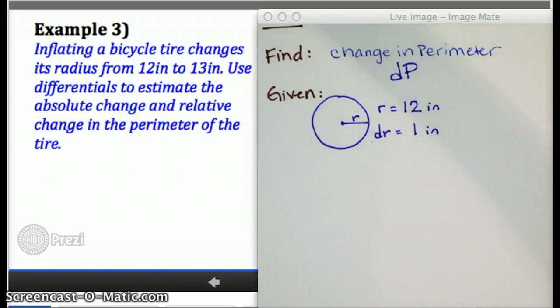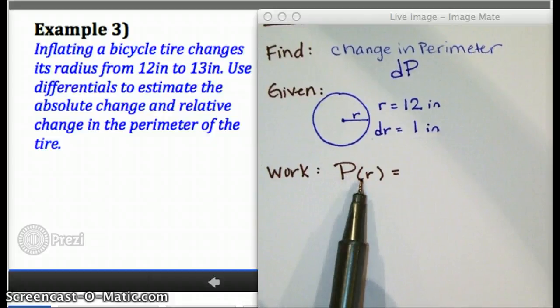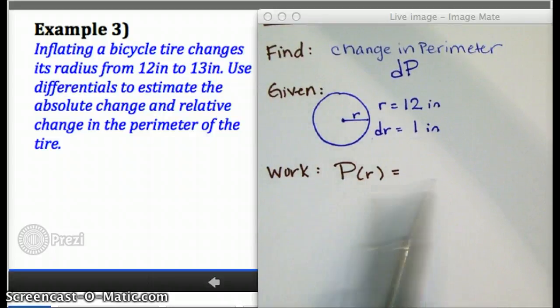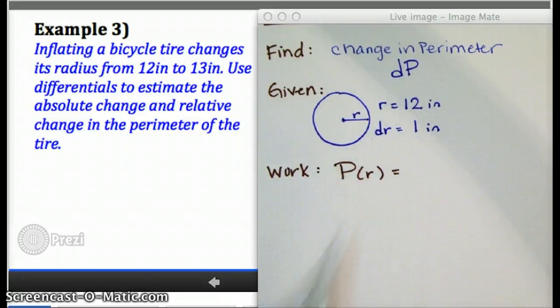What would I want to write as my equation? How am I going to start this? Right, I need a function whose output is perimeter and input is radius. And then eventually I'm going to use that function to solve for the differential.